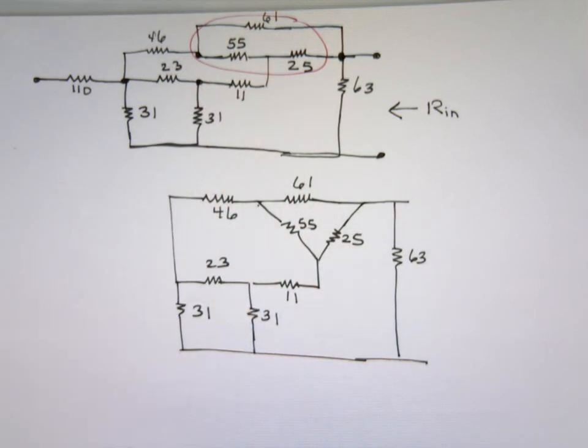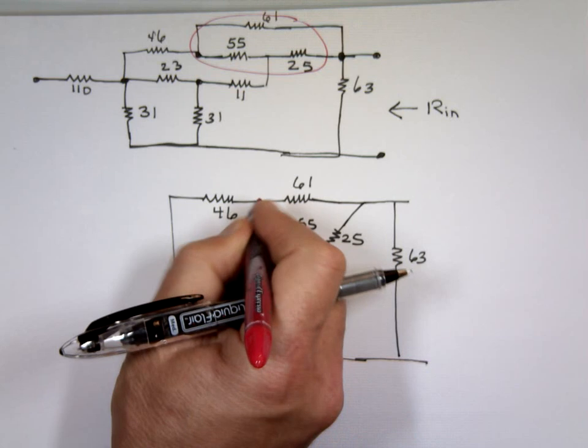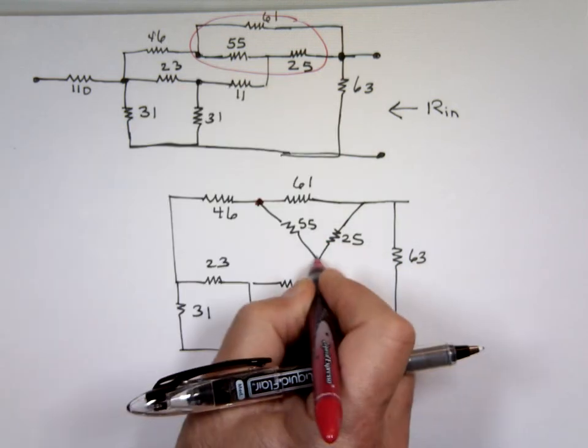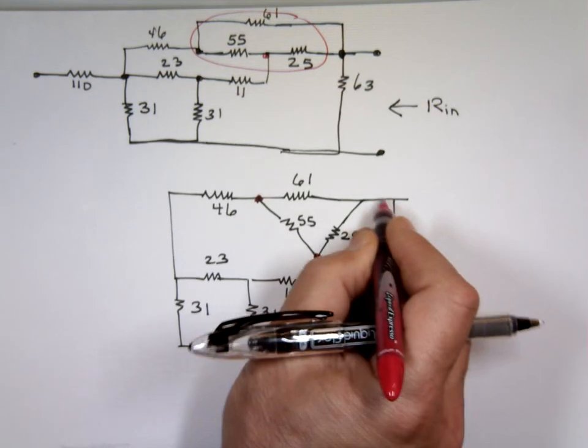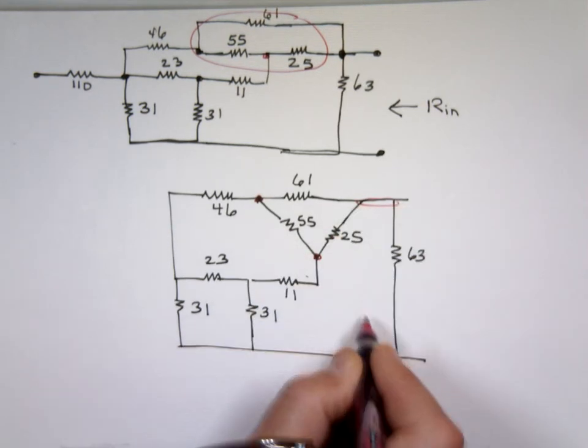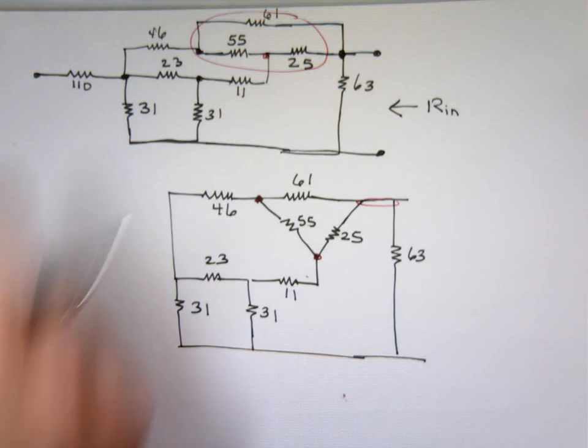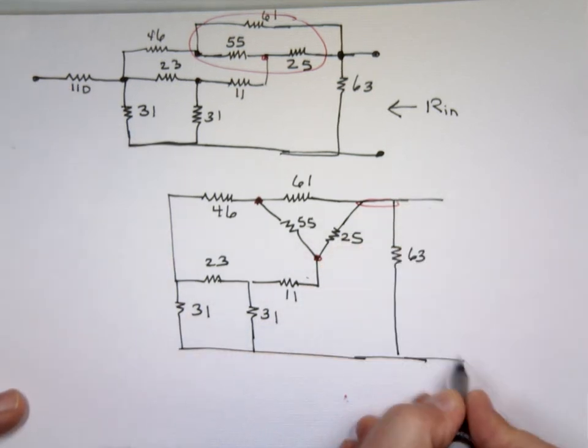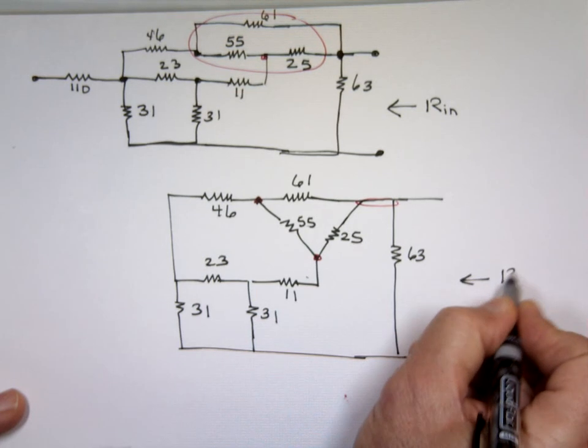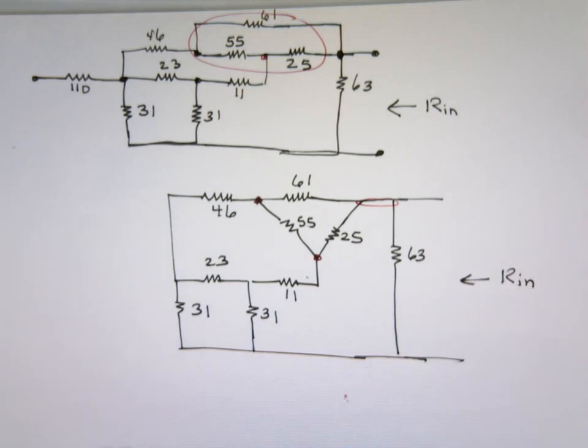So this point is that point. This and this are the same. This and this are the same. And this and this are the same. I can attach that one down here. I can push it to the right a little bit there. And this resistor is not going anywhere, so I dropped it. So I didn't convert anything yet. I'm just redrawing the circuit.